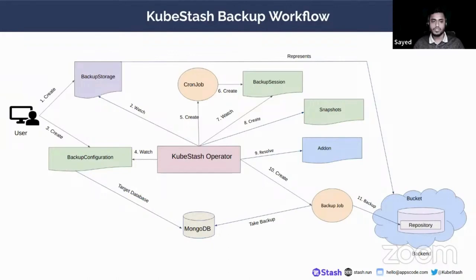First, the user creates a backup storage, which is watched by the KubeStash operator. To take a backup, the user needs to create a backup configuration where the target database and repository are specified. The KubeStash operator watches this backup configuration and creates repositories and a cron job depending on the schedule. The cron job then creates a backup session to take the backup when triggered on schedule.